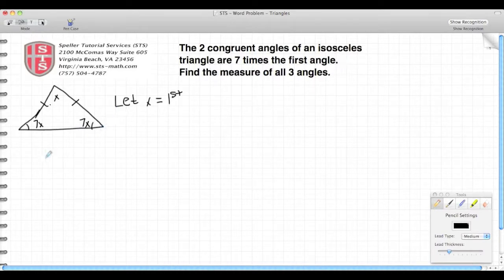Another property of all triangles is that their interior angles always add up to 180 degrees. So using that fact and what I've defined here, we're going to solve for all three angles. I'm going to add the first angle, which I call x, plus the two congruent angles, which are defined as 7x. And all that's going to equal 180 when I add all three of those angles up.